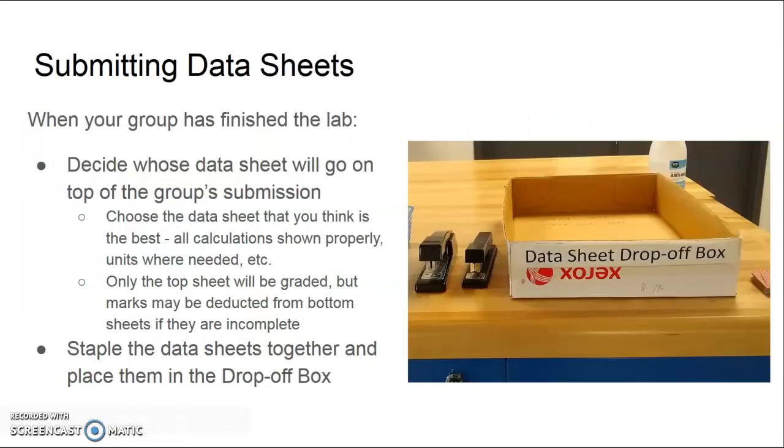When you and your group have finished working on the lab experiment you're going to decide together whose data sheet is going to go on the top because you're going to staple them all together to submit them. We're going to be grading the top sheet as I mentioned so you want to choose the data sheet that you think is the best in terms of how it's been completed so the calculations are shown properly, all the data has been recorded correctly, the units are where they're needed. You're not picking the one with the best handwriting because we're grading content not how it looks so you'll staple them together and you'll put them in the data sheet drop-off box that is shown in the picture here.